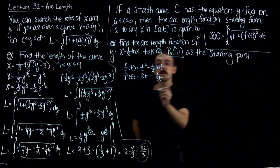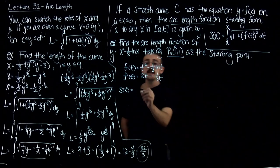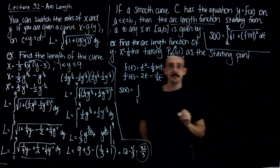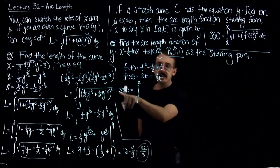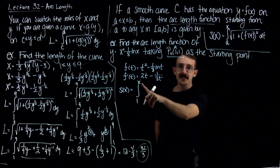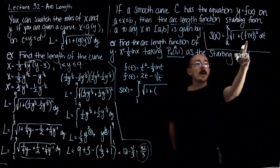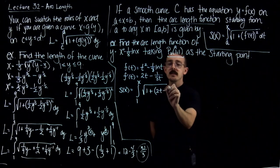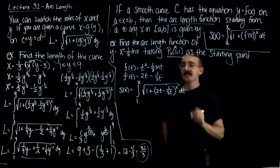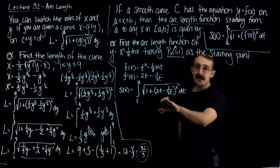Now I plug into the formula. The arc length function is the integral from 1 to x, with x as the variable — it's the top bound of the integral, telling you where to stop finding the arc length starting at 1. I have the square root of 1 plus (2t minus 1 over 8t) squared, dt. The challenge is simplifying this so I can integrate it. I'll do FOIL on the squared term.